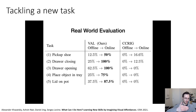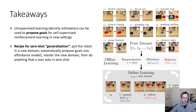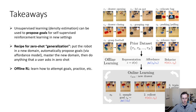Across the board, when we provide this pre-training and online fine-tuning phase without supervision, the robot's performance on downstream tasks increases substantially. The takeaway is that unsupervised learning or density estimation can be used to propose goals for self-supervised RL in new settings. This gives us a recipe for zero-shot generalization: put the robot in a new domain, automatically propose goals via the affordance model, master the new domain, and then do anything the user asks for in zero-shot. Offline RL helps learn how to attempt goals; online RL allows quickly mastering a new domain.